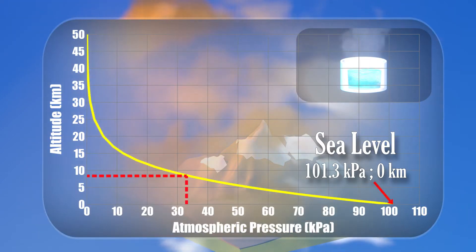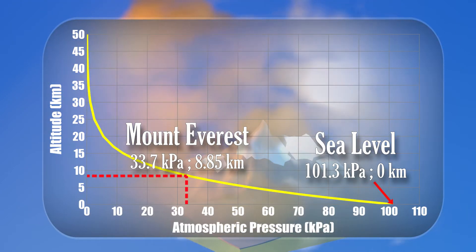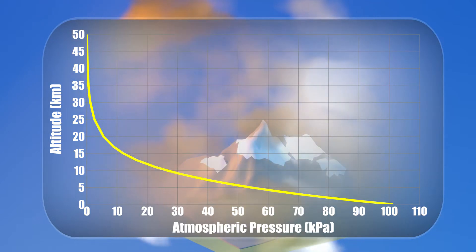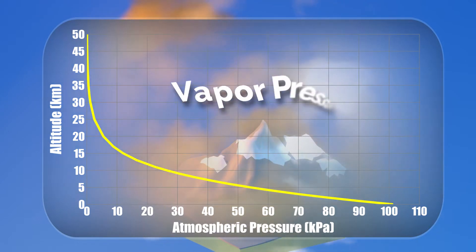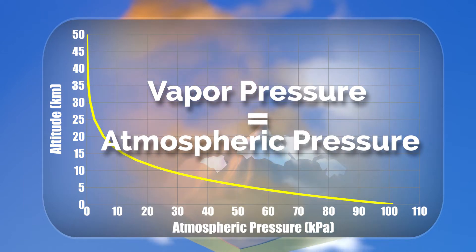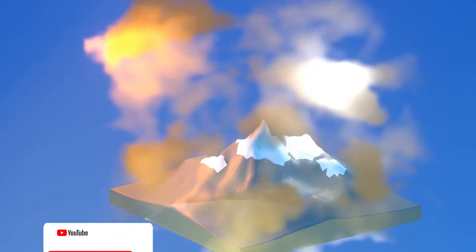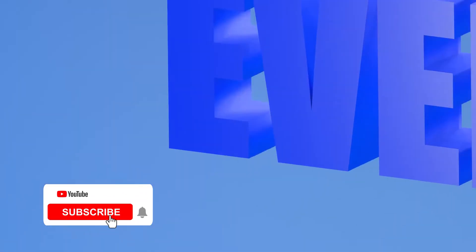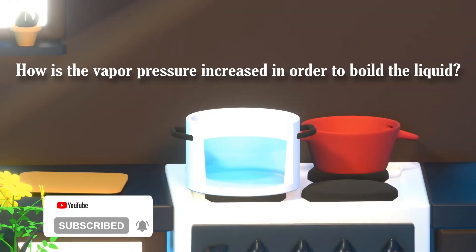The higher the altitude, the lesser the atmospheric pressure. Therefore, less vapor pressure is necessary to form bubbles. A liquid boils when its vapor pressure is equal to atmospheric pressure. But what if a liquid has a vapor pressure lesser than the atmospheric pressure? How is the vapor pressure increased in order to boil the liquid?